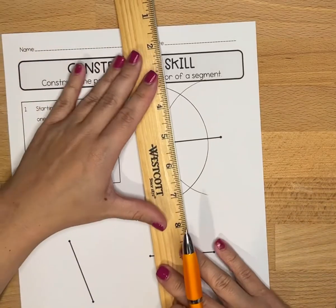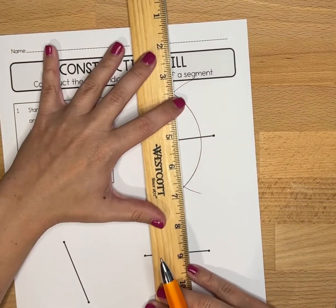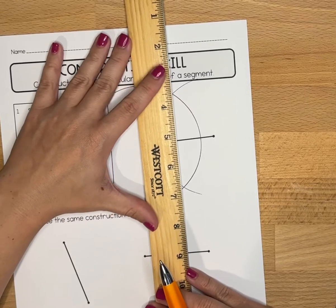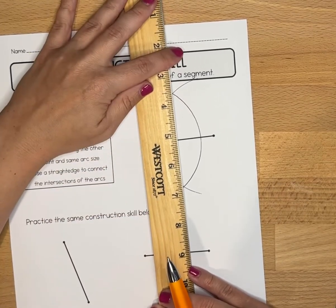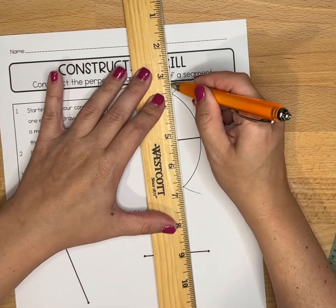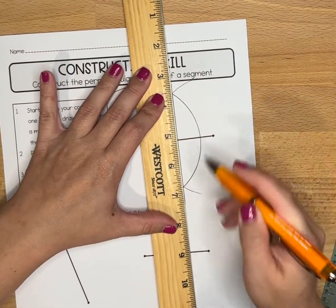If they do, we are ready for our final step, which is to use our straightedge. Line it up nicely with those two points of intersection, and then we're going to draw a nice straight line through.